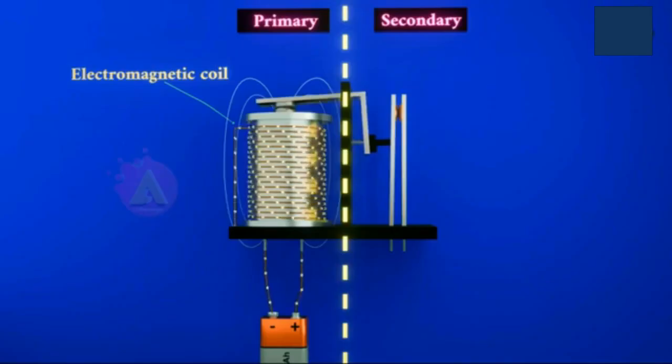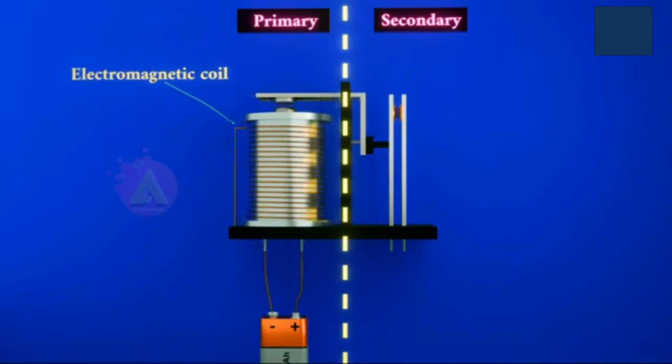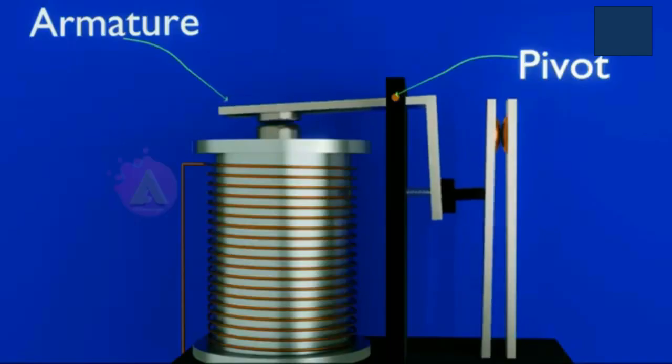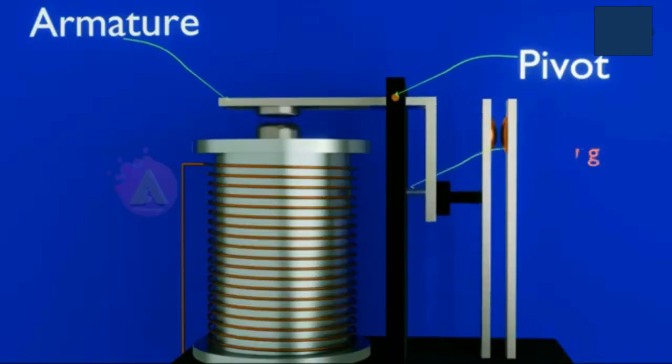When a control voltage is applied to the relay coil, current flows through it. This creates an electromagnetic field around the coil. The electromagnetic field pulls the armature, a small lever with a movable contact, toward the coil.